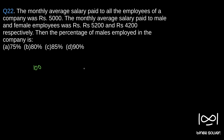Say x percentage is male. Then 100 minus x is the percentage that is female. So we need to find x. If x people are male, since we assumed the total number as 100, we can say x people are male and 100 minus x are female.